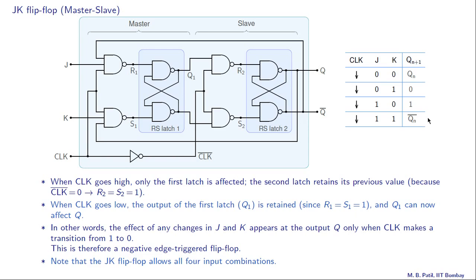Here is the transition table for the JK master-slave flip flop. There is a new symbol indicating a negative-going clock edge, meaning the clock is going from one to zero—only when that happens are all these entries valid. There is also new notation: Qn+1 denotes the value of Q after the nth clock pulse, and Qn denotes the value of Q before the nth clock pulse.